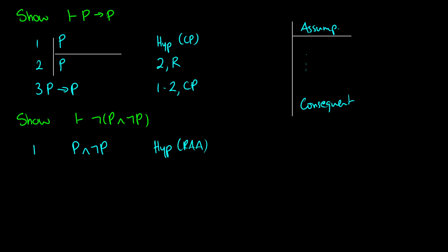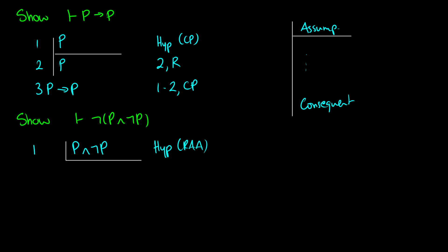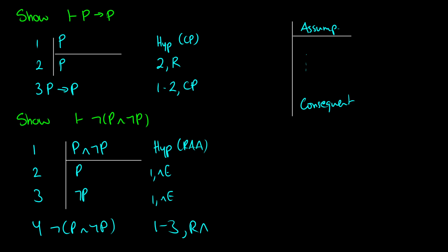If I have P∧¬P, that's a contradiction by definition. To make this explicit, in lines 2 and 3 I can use and-elimination on line 1 to get P and ¬P separately. Then in line 4 I can claim this is a proof by contradiction because I have P and ¬P — so from lines 1 to 3 that is RAA. We didn't need any initial given assumptions to get ¬(P∧¬P).